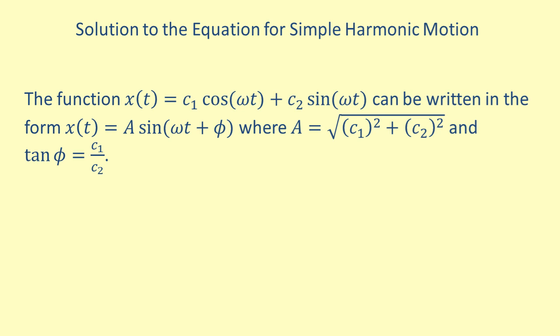We can rewrite x of t as A times the sine of the quantity omega t plus phi. This form makes the magnitude of the wave obvious, as it's just A. We can define A as the square root of the quantity c1 squared plus c2 squared.